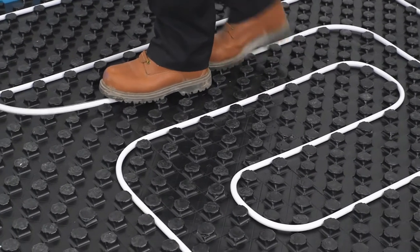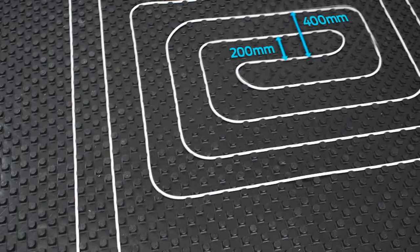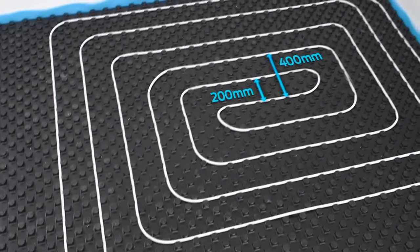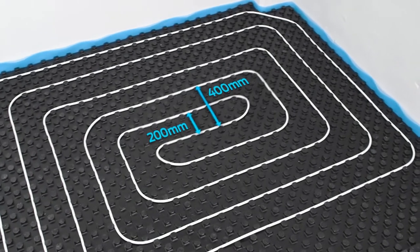Because the pipework spirals in and then returns in the opposite direction, the initial inward pipe spiral has to be double the designed distance apart. So a 200mm design centre would mean initially laying the inward spiral at 400mm.